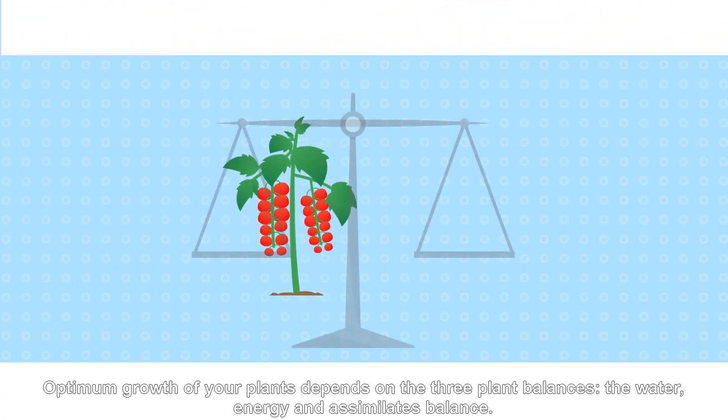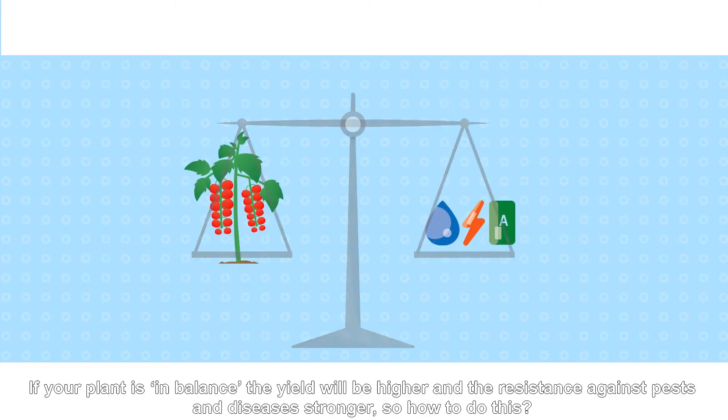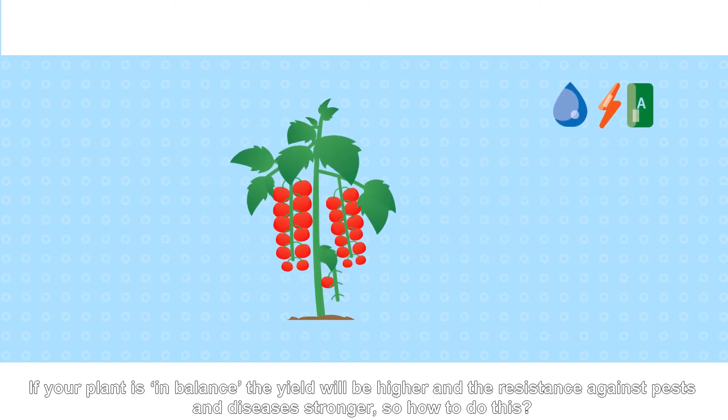Optimum growth of your plants depends on the three plant balances: the water, energy, and assimilance balance. If your plant is in balance, the yield will be higher and the resistance against pests and disease is stronger.